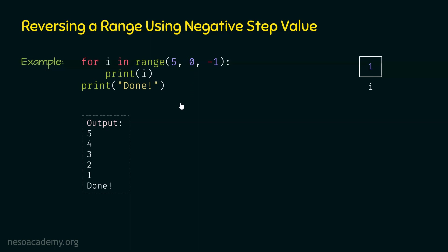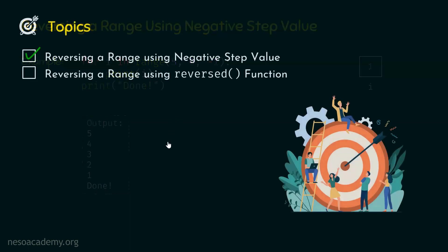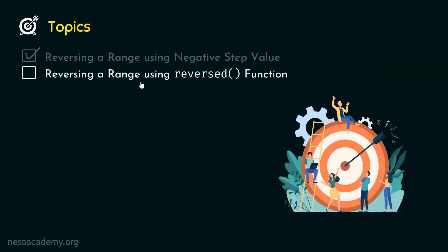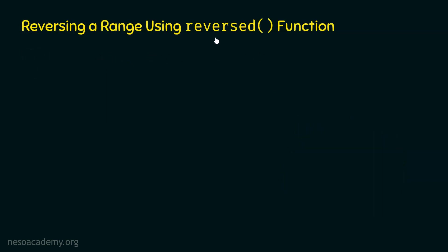Now, as we have learned how to reverse a range of numbers using negative step value, let's move on to the next topic: reversing a range of numbers using the reversed function. Python provides us this function to reverse a range of numbers. We can pass the range function as the argument to the reversed function, which needs a range of numbers, and range function returns exactly that.